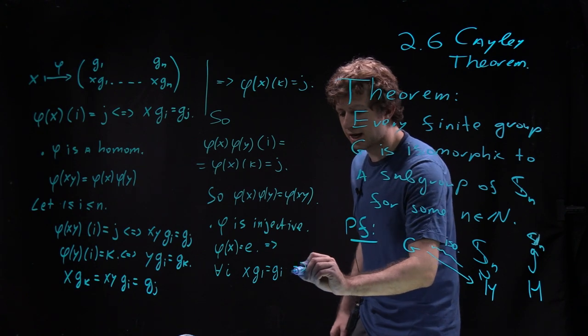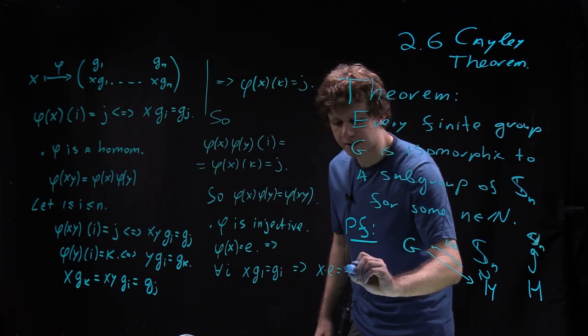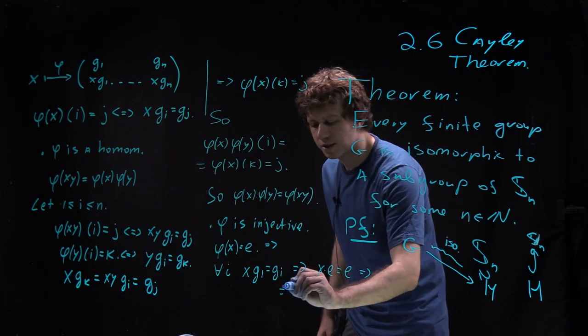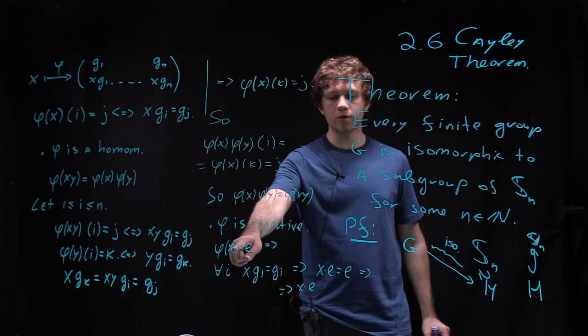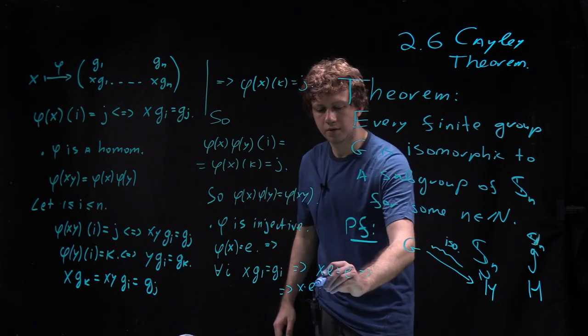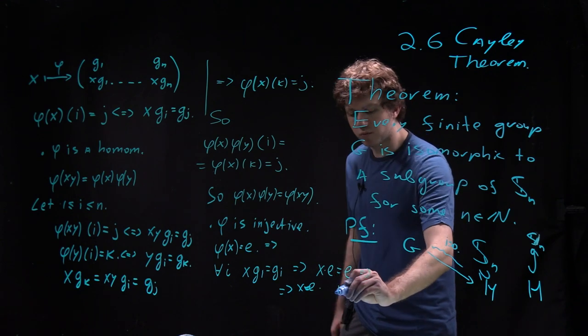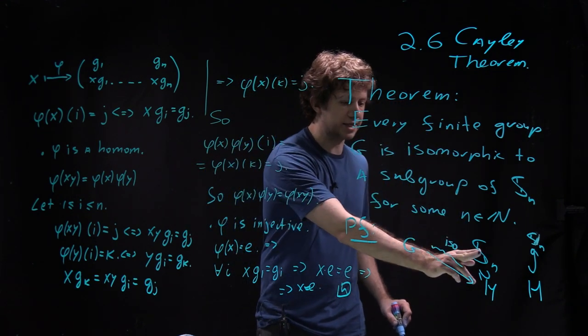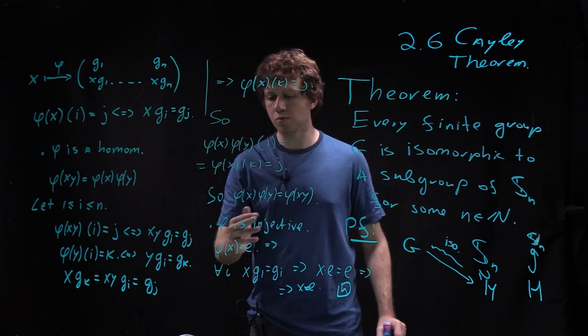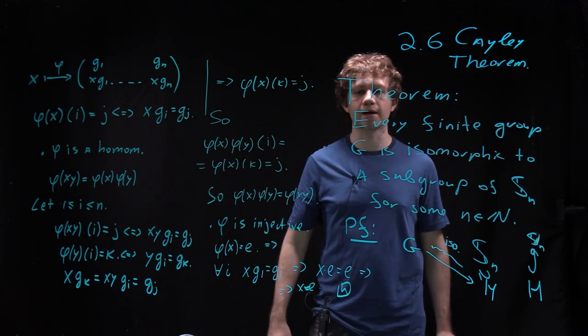But in particular we can just take identity. So X times identity equals identity. But then it means that X is identity. So if X is in the kernel, then it's trivial. So kernel is trivial. And that finishes the proof because we constructed a homomorphism from G to S_n which is injective and a homomorphism. And this means that it's an isomorphism with a subgroup of S_n.